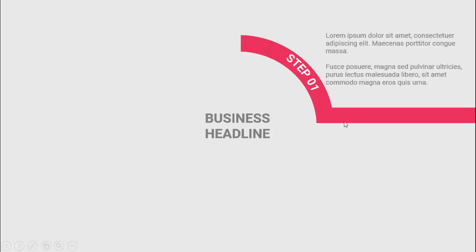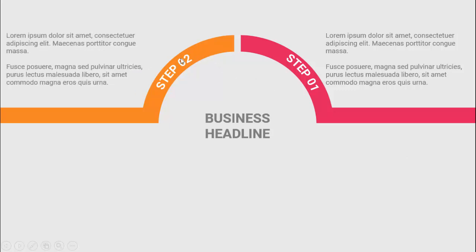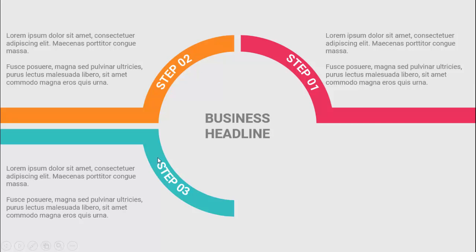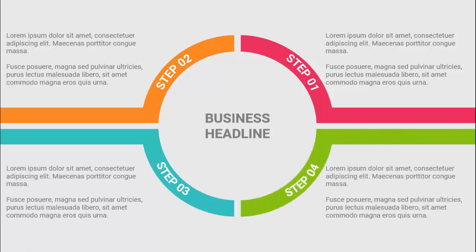In today's tutorial I'm going to show you how to create a four-step infographic slide in PowerPoint. This is how the slide works: I've put the business headline in the center. When I click, it will show Step 1, and you can add some detailed text. Clicking again shows Step 2 in a different color, then Step 3 from the right, then Step 4. Depending on your requirement, you can change and edit this slide.